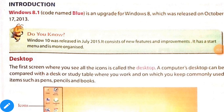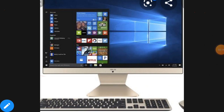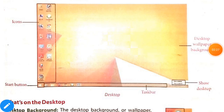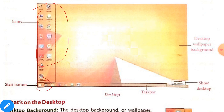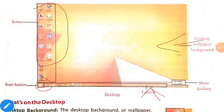Now let's come to the next picture. I will show you the picture of the desktop. This area of the computer is called the desktop, where you see many types of icons. In your book you can also see a picture showing the desktop with icons, the Start button, the taskbar, the desktop wallpaper background, and the 'Show Desktop' button.